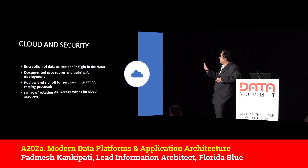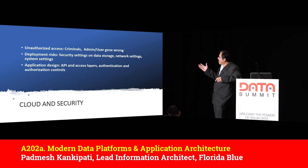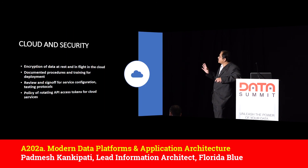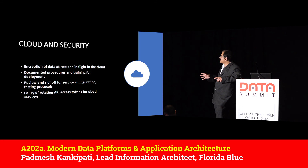For cloud and security: major risks include unauthorized access, deployment risk, and application design risk. Ensure security settings on data storage are correct, but also check the API and access layers — authorization and authentication controls. If there is a problem there, your data has a hole. Encrypt data at rest and in flight. Document all deployment procedures and training. Have a review and sign-off for service configuration and testing protocols. Maintain a policy of rotating API access tokens for cloud services to ensure security.